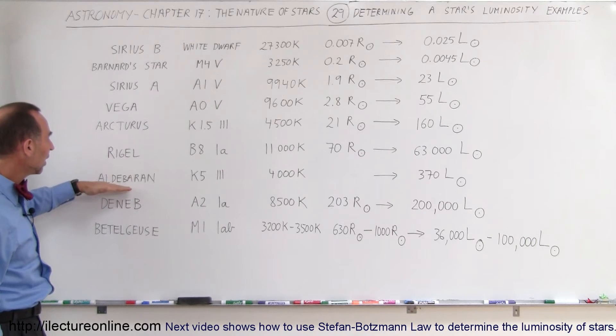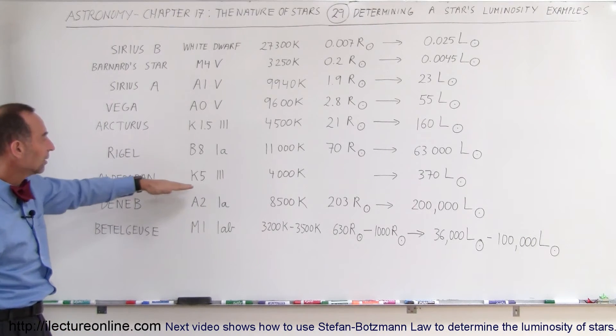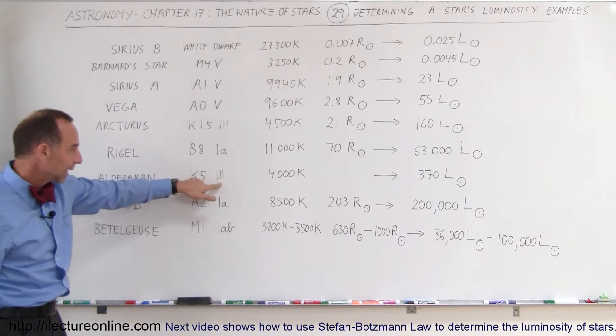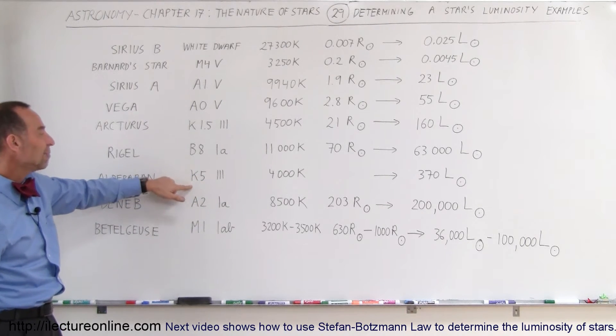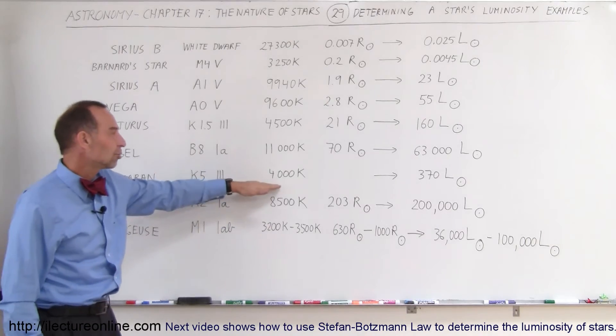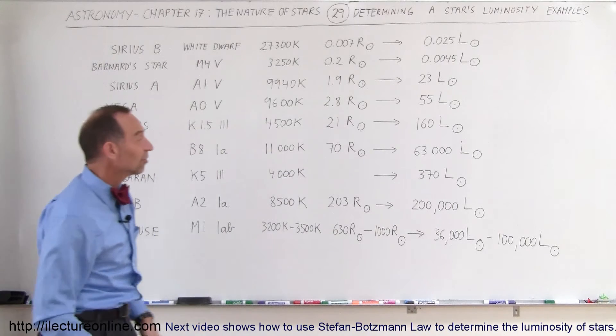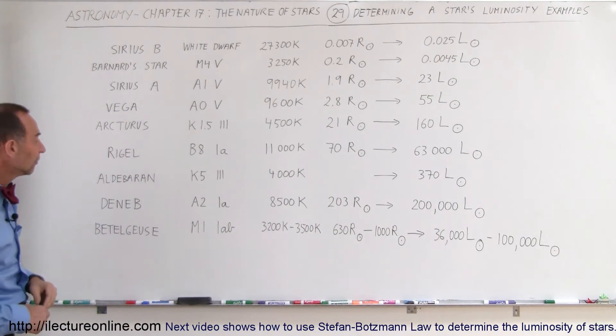Aldebaran, which is a star that's pretty close to Orion. K53, so here we have, again, a red giant. K5, meaning it's a lower surface temperature, I didn't get the radius on that star, and luminosity for that one, a red giant, is 370 times the luminosity of the Sun.